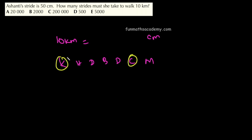How many jumps from kilometer to centimeter? 1, 2, 3, 4, 5 jumps to the right side. So, the decimal point will move 5 places to the right. If I move it 5 times to the right side: 1, 2, 3, 4, 5. This is the new decimal point position.